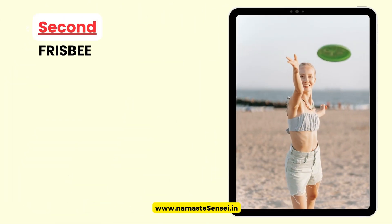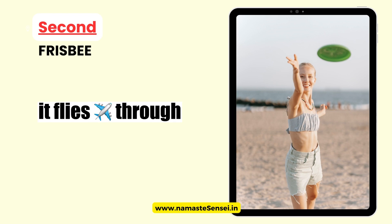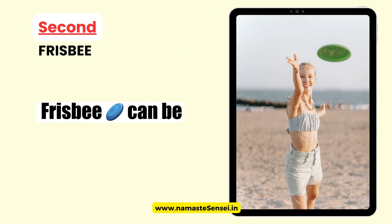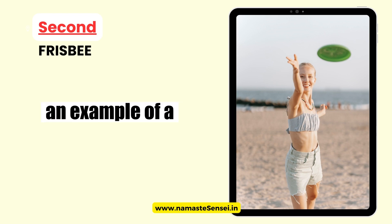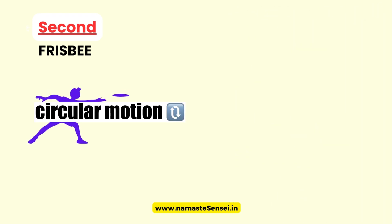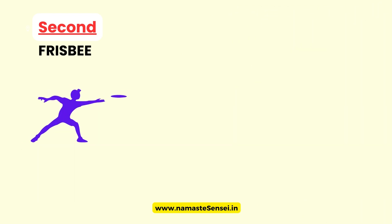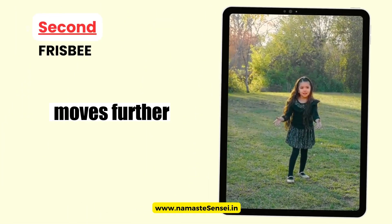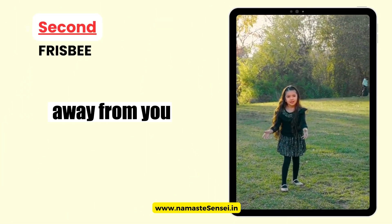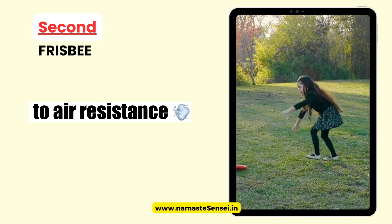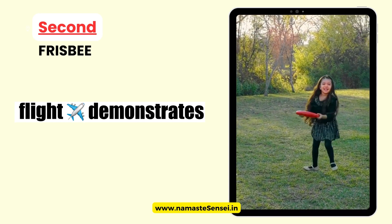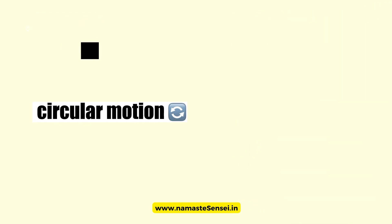Second, frisbee. When you throw a frisbee, it flies through the air in a curved path. The motion of a frisbee can be an example of non-uniform circular motion. As the frisbee leaves your hand, it accelerates, gaining speed and covering more distance. However, as it moves further away from you, it starts to slow down due to air resistance. This change in speed during its flight demonstrates non-uniform circular motion.